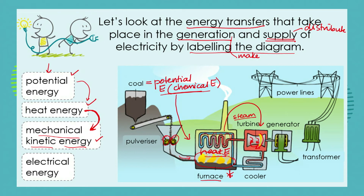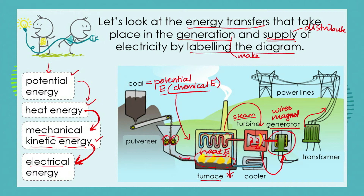The turning turbine spins a shaft which causes the generator to produce electricity. The generator has large magnets inside it with wires wrapped around them, and this generates electrical energy. So our next energy transfer is mechanical kinetic energy transferred into electrical energy, which is then sent down the power lines. To summarize: potential energy to heat energy, heat energy to mechanical kinetic energy, and mechanical kinetic energy to electrical energy.